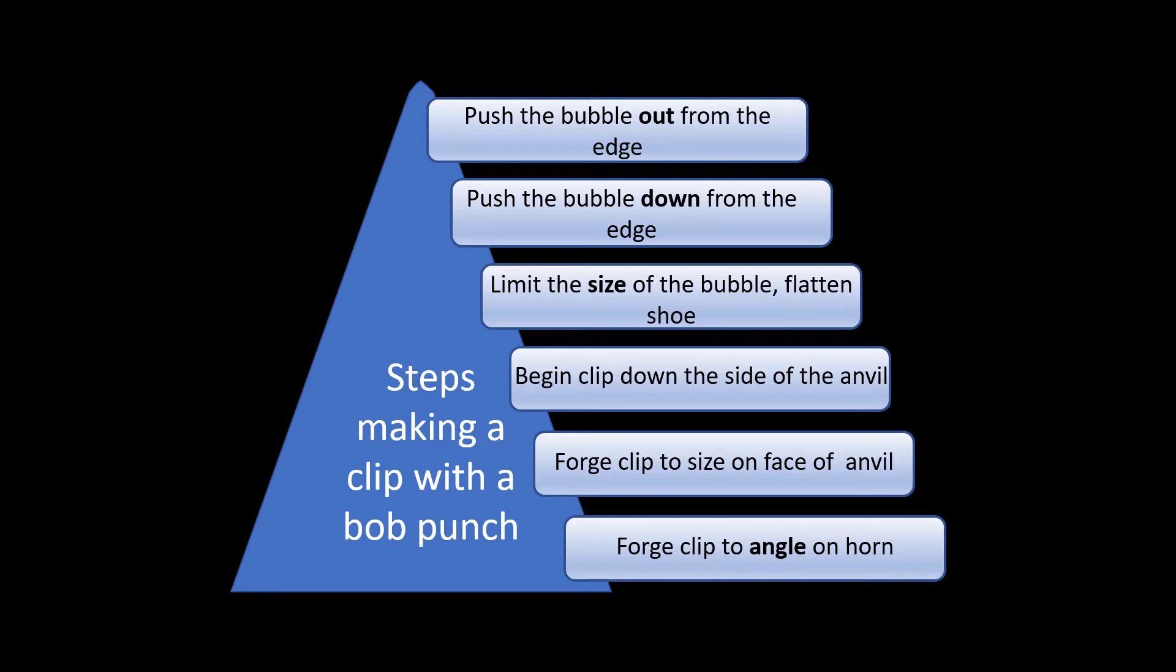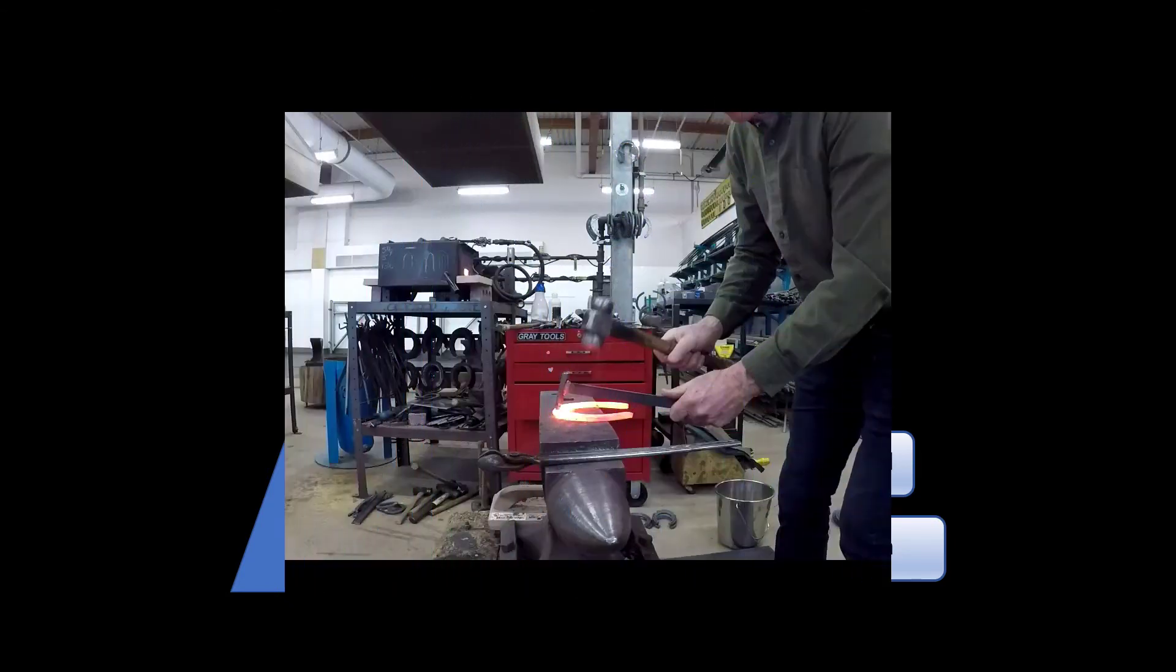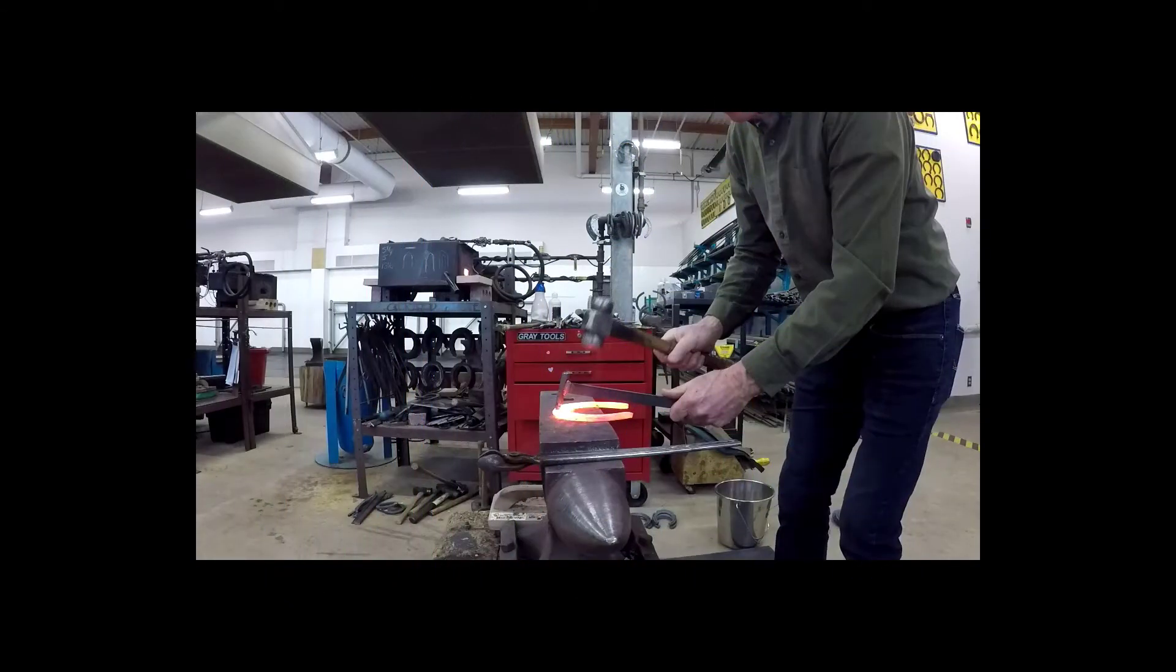The key to making consistent quality clips is to create the largest bubble possible with the minimum amount of distortion to the shoe. Creating the correct sized bubble with the minimum amount of distortion to the shoe can then be broken down into distinct steps.